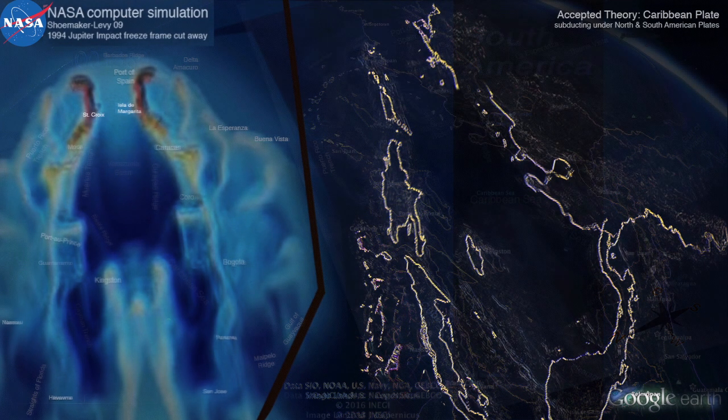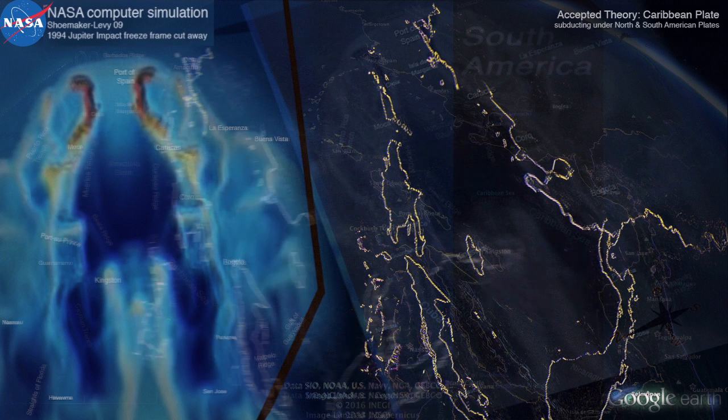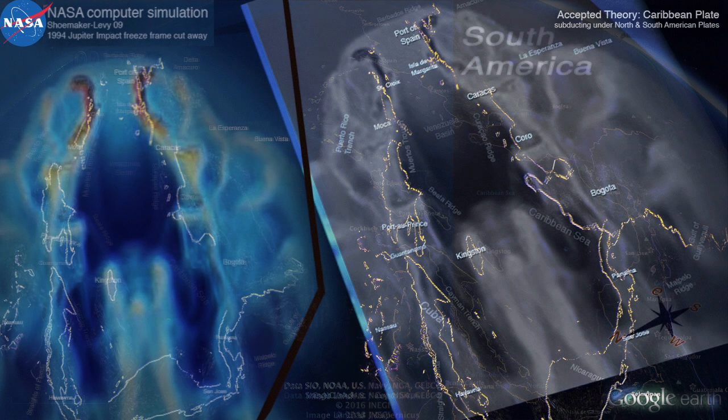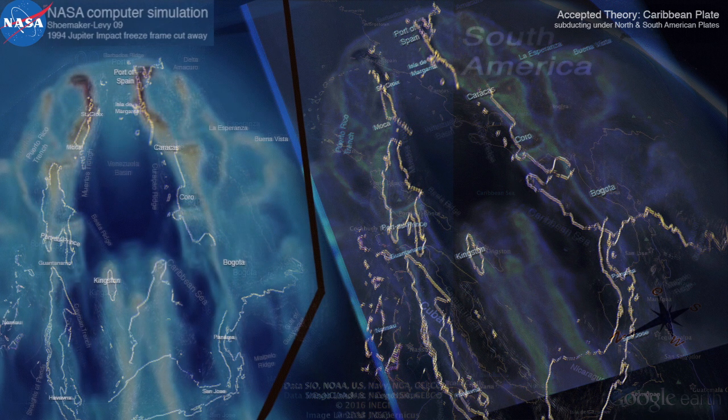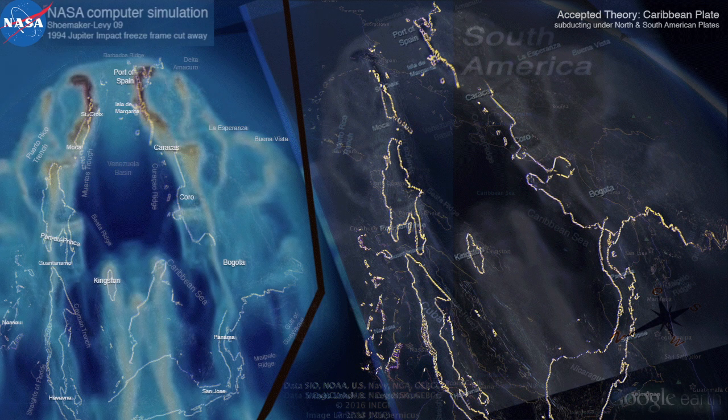I can bring the coastlines over the comet simulation and check how they line up. I know this theory is pretty out there, but something tells me that this is looking promising.